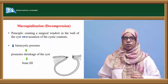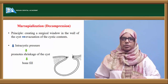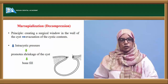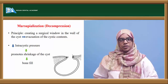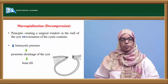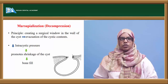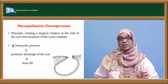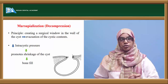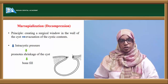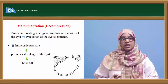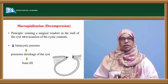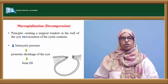The principle of marsupialization is creating a surgical window in the wall of the cyst to evacuate the cystic content. This decreases the intracystic pressure and promotes shrinkage of the cyst and eventual bone fill. This term is evolved from marsupials — for example, kangaroos, which keep their baby in a pouch. Similarly, we create a pouch in the oral cavity so that the cystic content is extroverted, and eventually granulation and bone fill take place, and the size eventually shrinks.